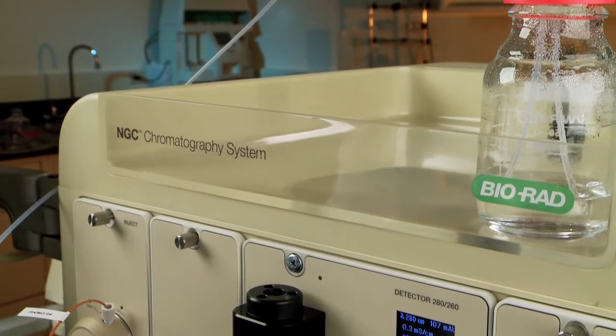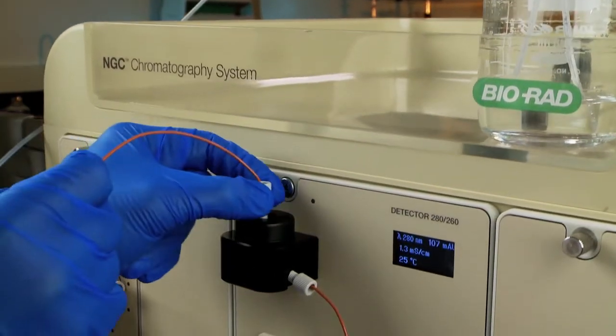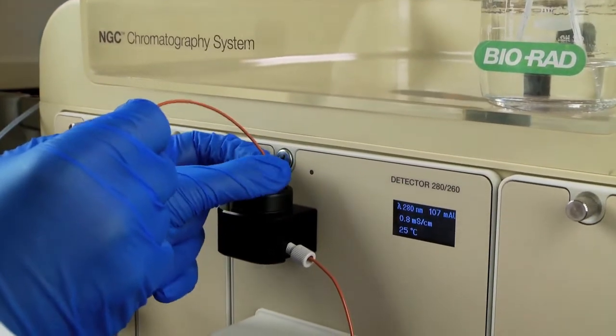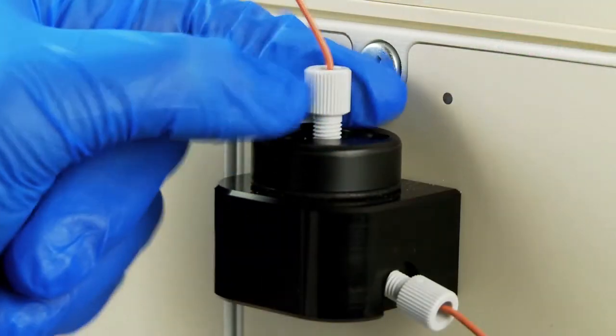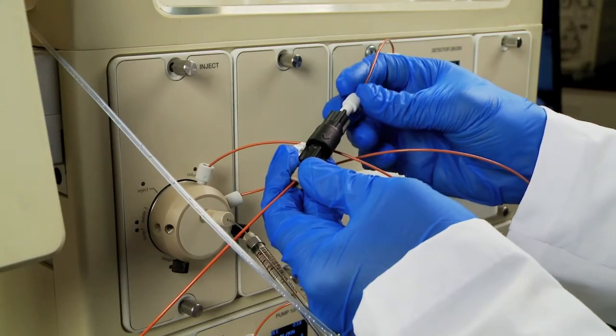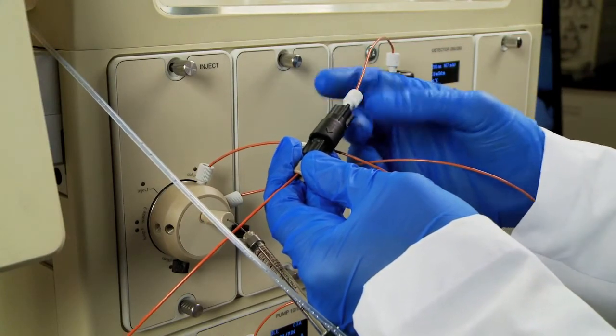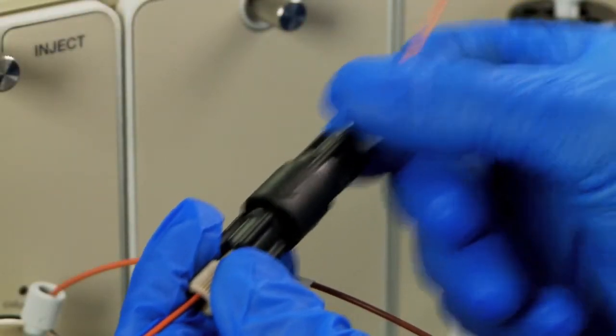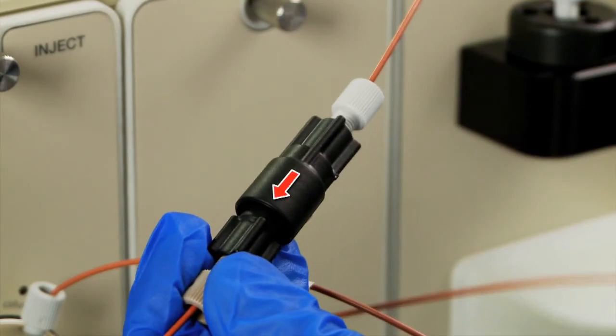Finally, you will attach the outlet tubing and back pressure regulator. Connect line number two into the top of the conductivity monitor and then connect the other end into the 40 psi back pressure regulator. The arrow on the body of the regulator should point in the direction of flow.